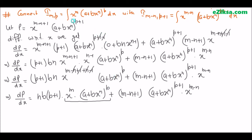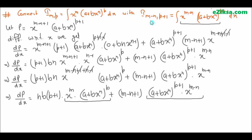The term x^M·(A+Bx^N)^P — if we put an integration sign in front of it, it becomes I(M,P). The term x^(M-N)·(A+Bx^N)^(P+1) — if we put an integration sign in front of it, it becomes I(M-N, P+1).